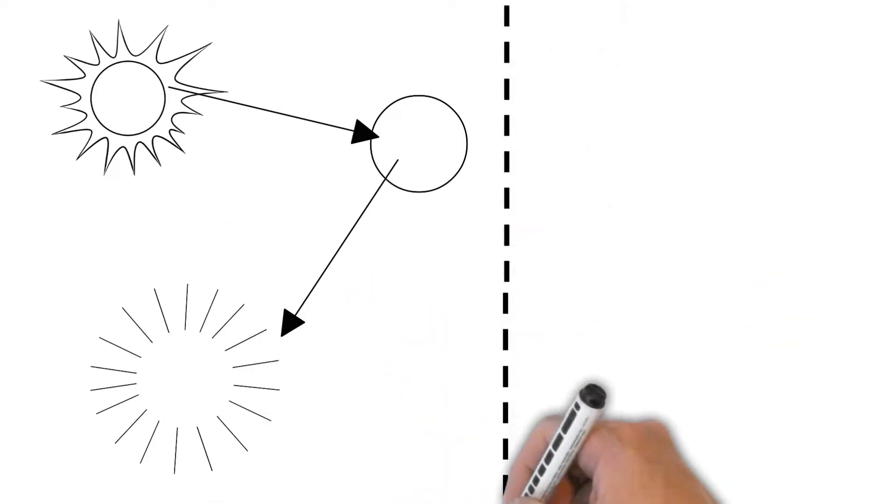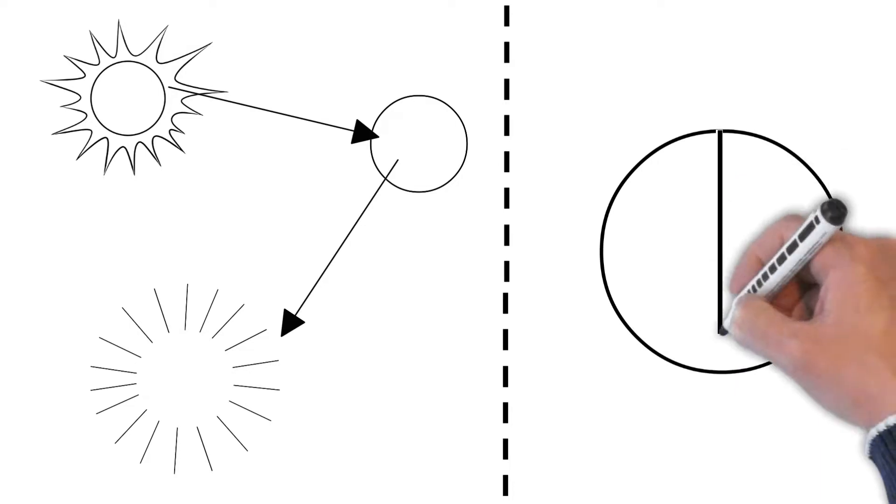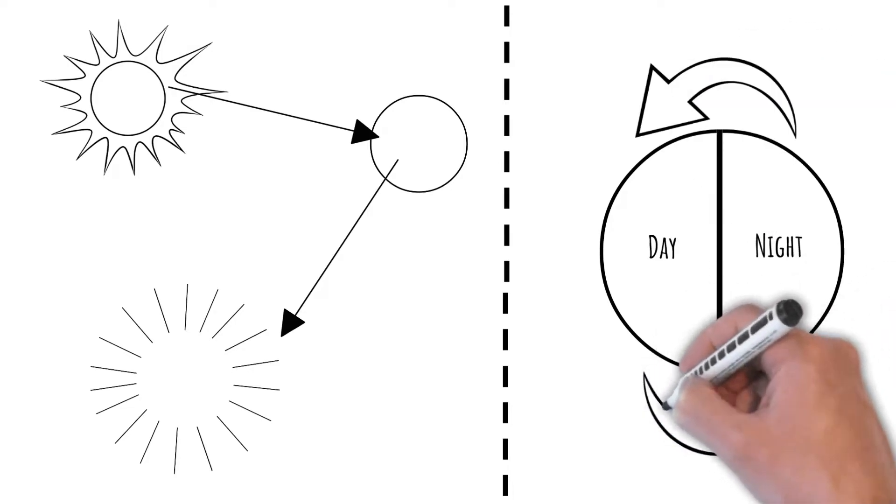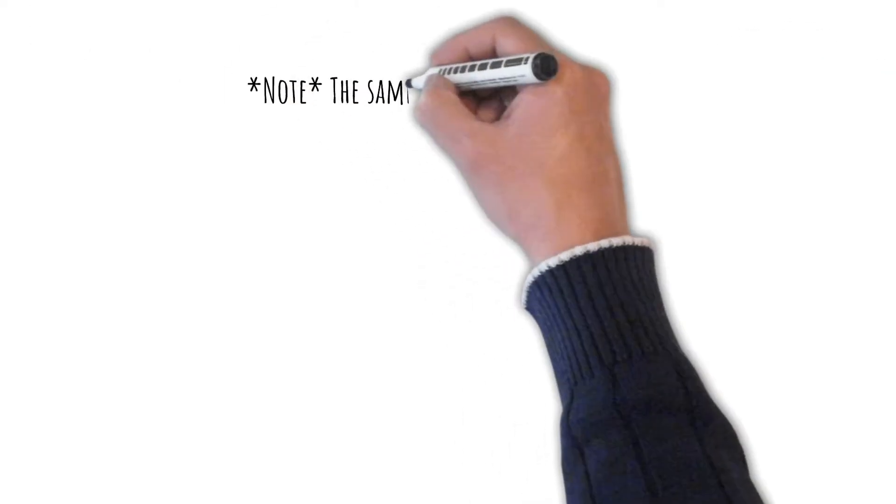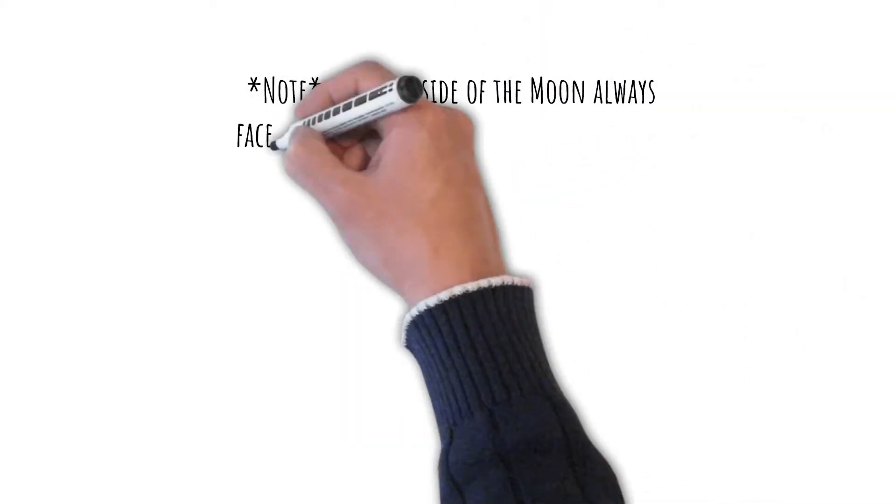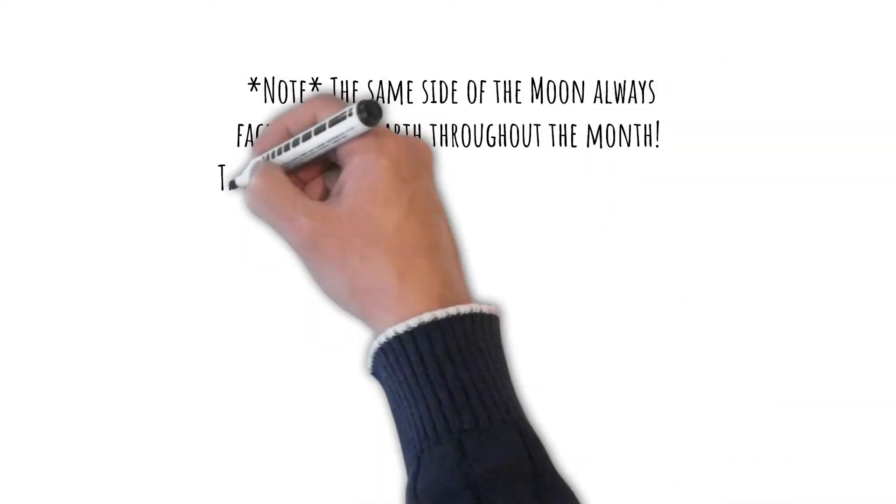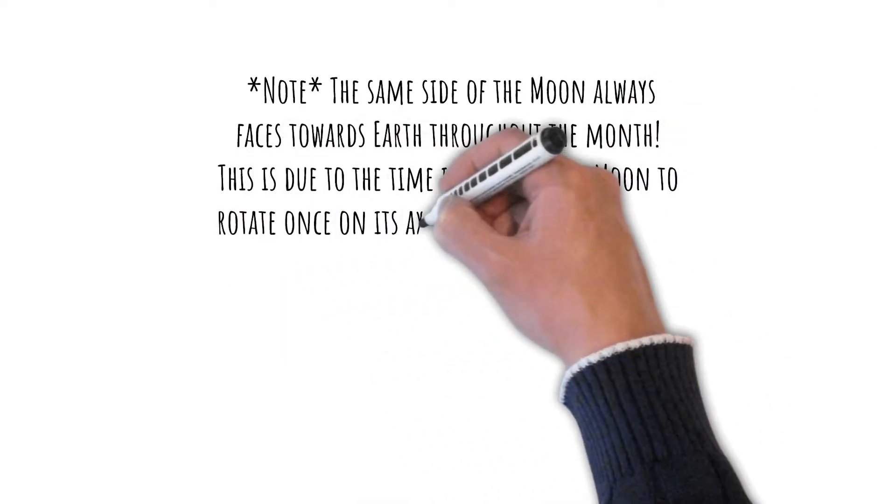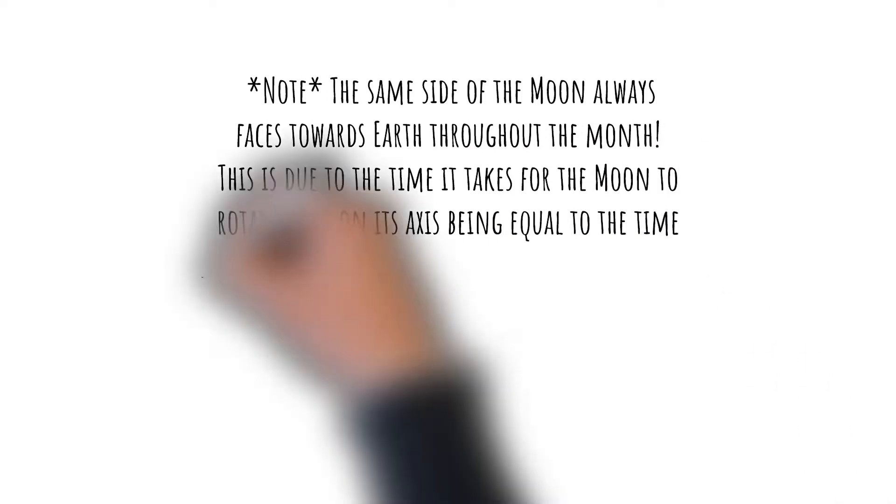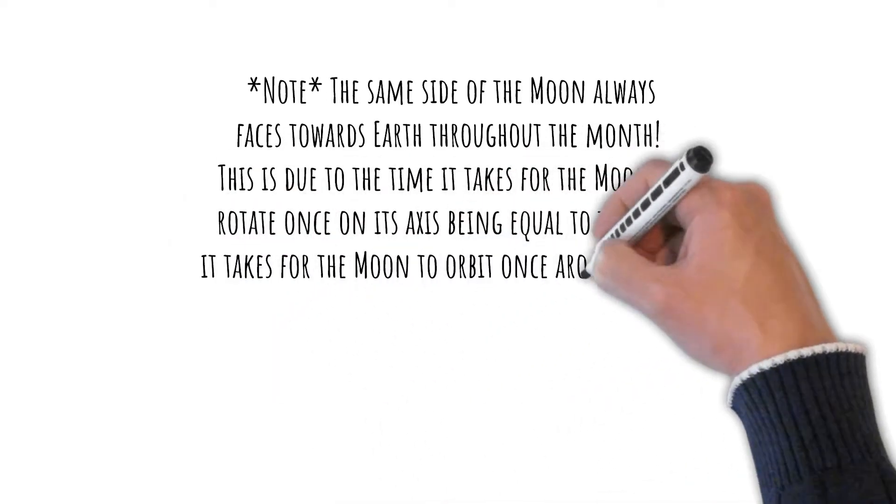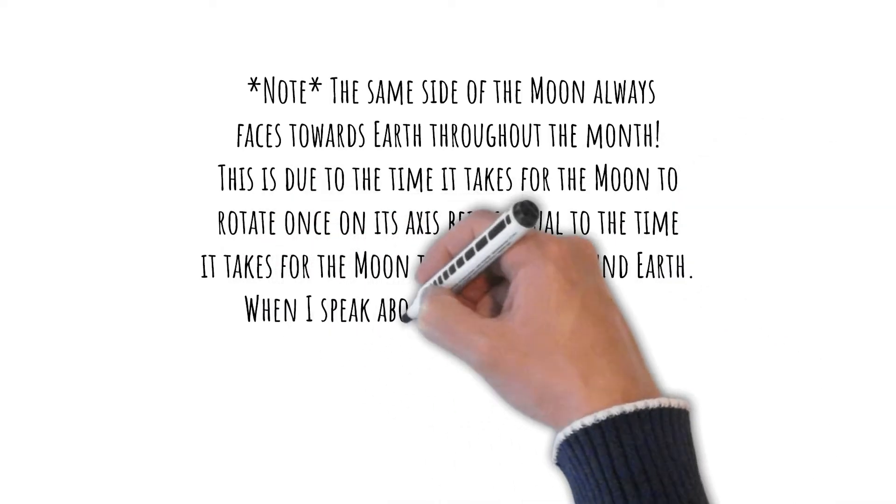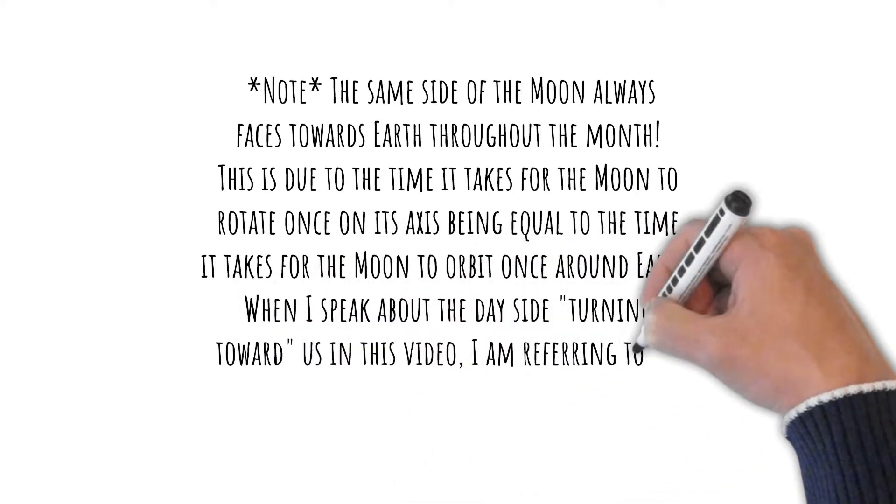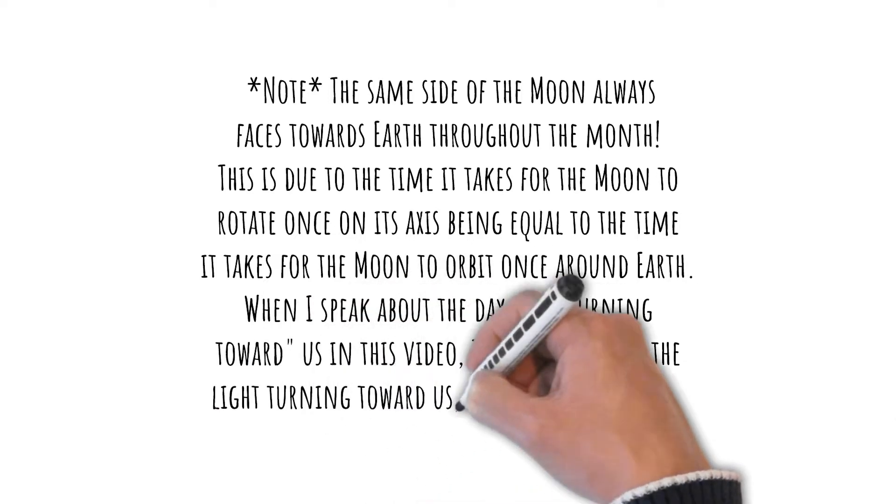Like Earth, the moon has a day side and a night side which change as the moon rotates. The sun always illuminates half of the moon while the other side remains dark. It should be noted that the same side of the moon always faces towards Earth throughout the month. This is due to the time it takes for the moon to rotate once on its axis being equal to the time it takes for the moon to orbit once around Earth. When I speak about the day side turning toward us in this video, I am referring to the light turning toward us, not the actual moon.